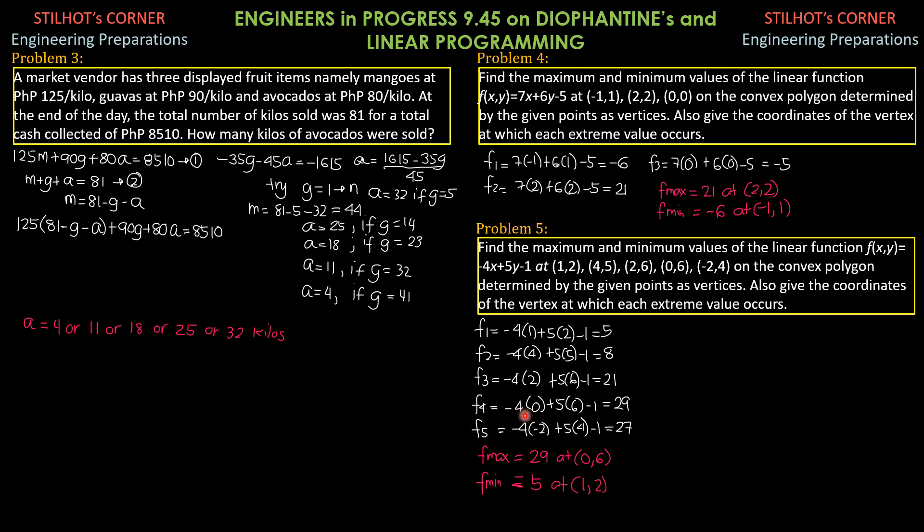F of 4 at 0 comma 6, negative 4 times 0 plus 5 times 6 minus 1 equals 29. And F of 5 at negative 2 comma 4 is negative 4 times negative 2 plus 5 times 4 minus 1, so 27.